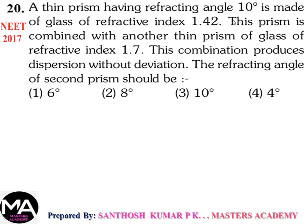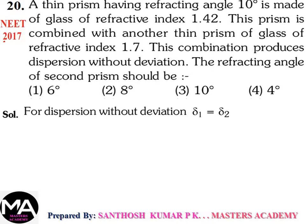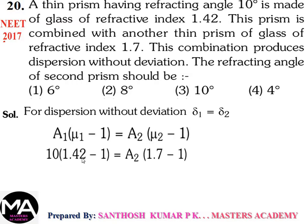Question 20: A thin prism of refracting angle 10° with refractive index 1.42 is combined with another thin prism of refractive index 1.7. The combination produces dispersion without deviation. Find the refracting angle of the second prism. For dispersion without deviation: δ1 = δ2, so A1(μ1 − 1) = A2(μ2 − 1). Therefore 10 × 0.42 = A2 × 0.7, giving A2 = 0.42/0.7 × 10 = 6°. Option 1: 6 degrees.